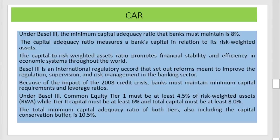Under Basel 1, the capital adequacy ratio requirement was 8%, and under Basel 2 it was also 8%, though some changes were introduced to Tier 1 and Tier 2 components. Under Basel 3, the minimum capital adequacy ratio a bank must maintain is 8%. The common equity Tier 1 capital must be 4.5% of risk-weighted assets, Tier 1 capital must be 6%, and total capital must be 8%. The total minimum capital adequacy ratio including the conservation buffer is 10.5%.